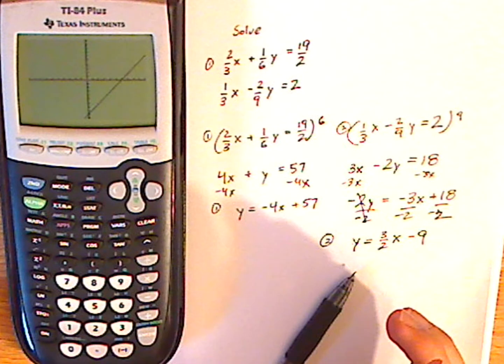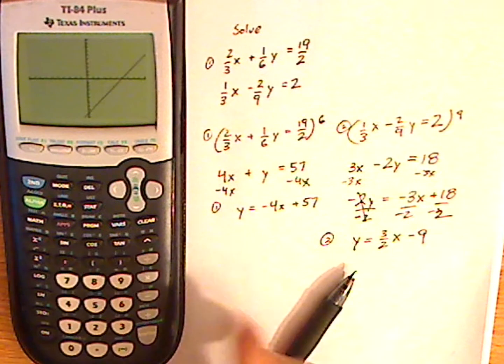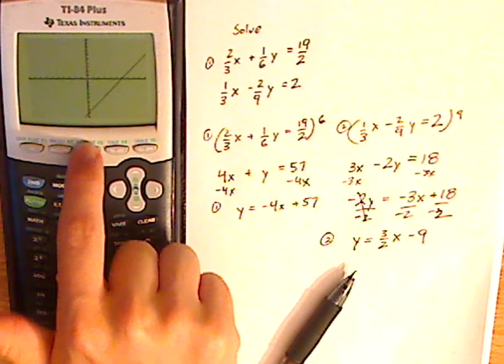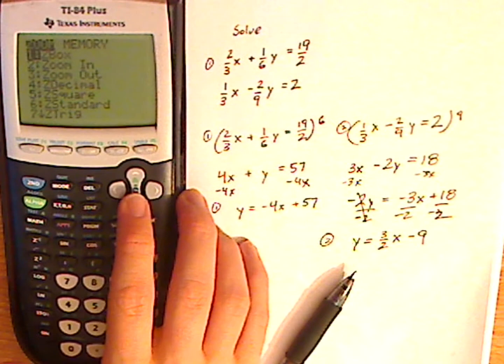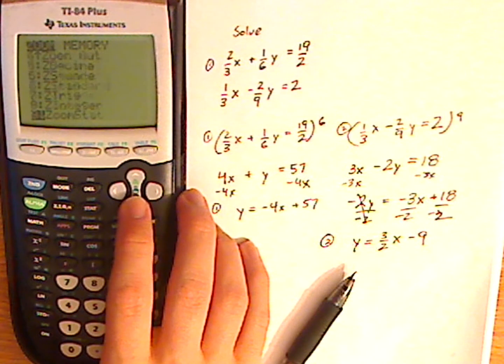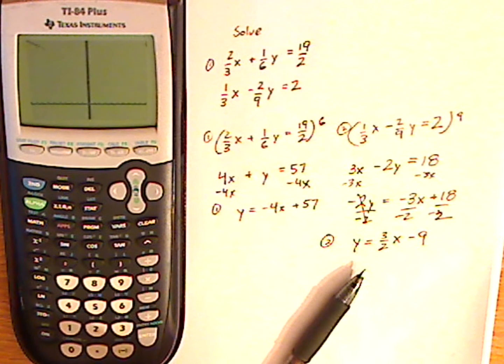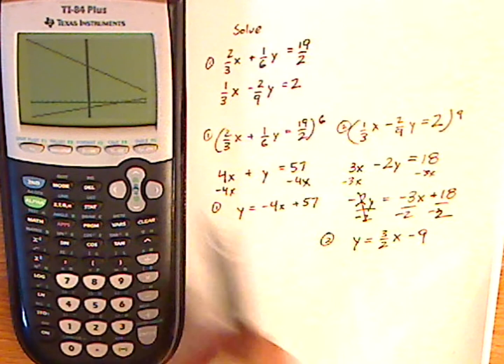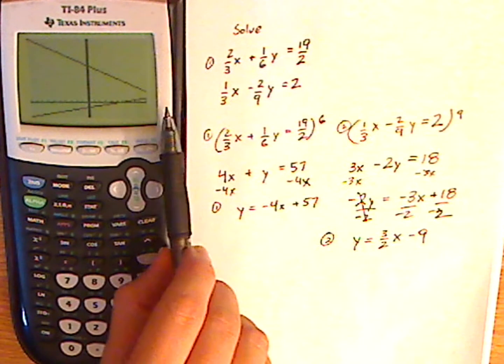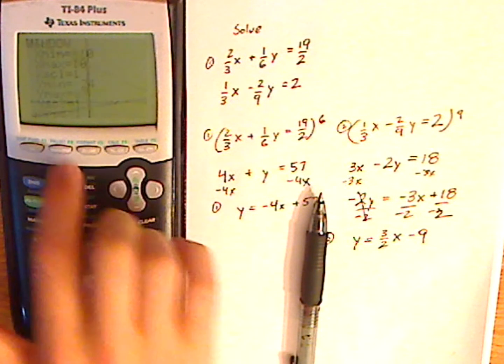There's one, and the other one's kind of missing. So I'm going to zoom out a little bit. So zoom, and I'm going to do zoom fit. Now it looks like the intersection is somewhere over here. So I have to expand this a little bit more.